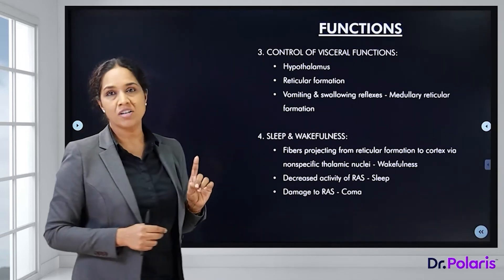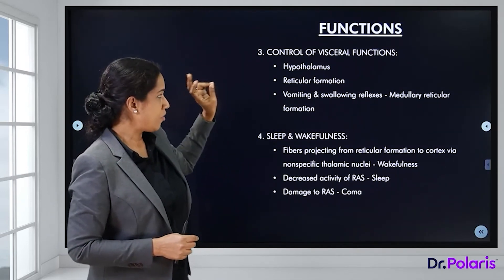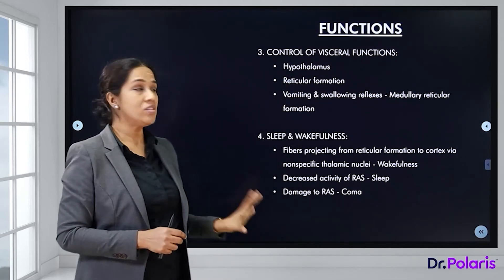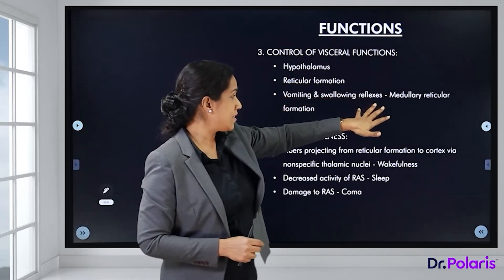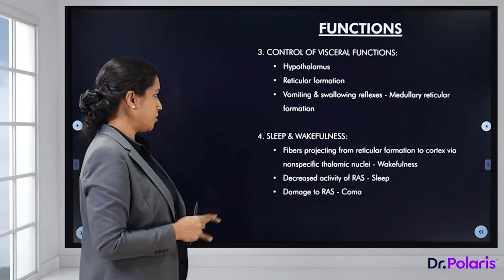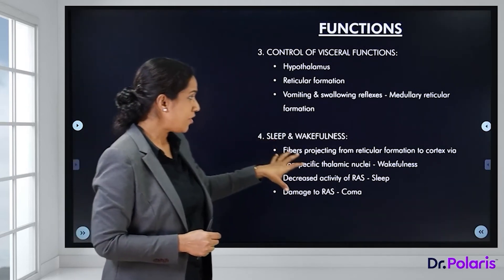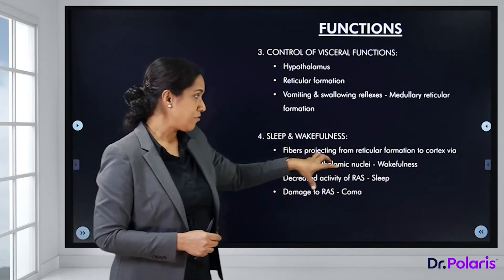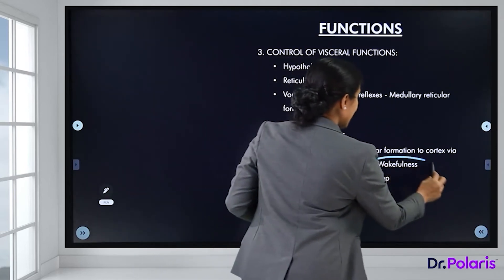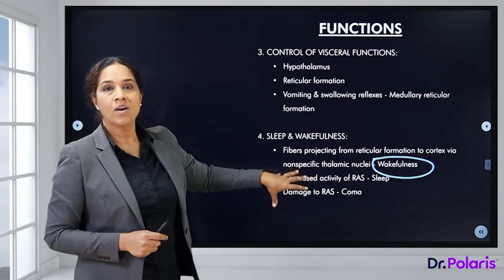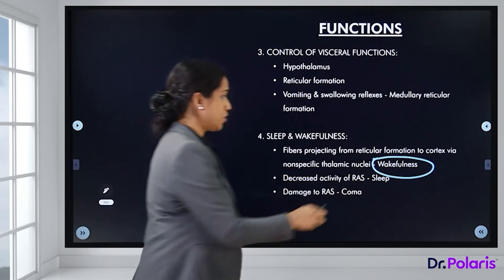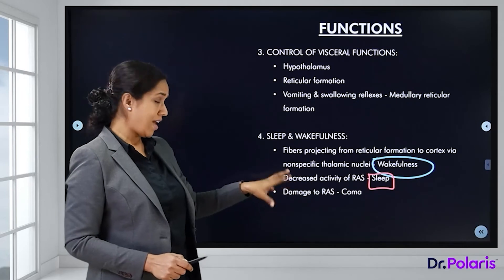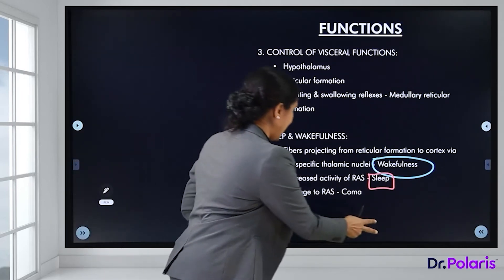The third function is control of visceral functions: the hypothalamus and reticular formation together control the functions of visceral organs. Vomiting and swallowing reflexes are under the control of the medullary reticular formation. For sleep and wakefulness, fibers projecting from the reticular formation to the cerebral cortex via non-specific thalamic nuclei keep a person in a state of wakefulness. Decreased activity of the reticular activating system induces sleep, and damage to it results in coma.